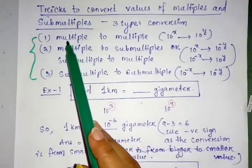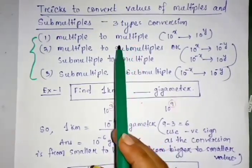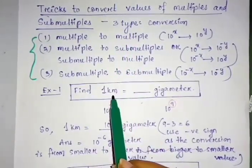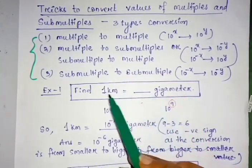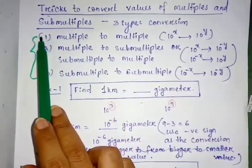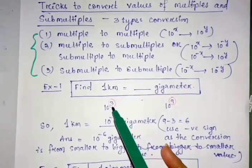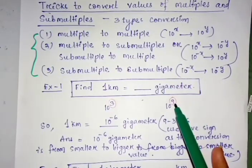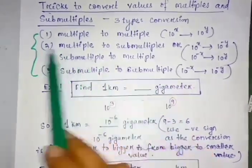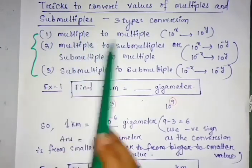First of all, we convert multiple values to multiple values. For example, if the question asks 1 km equals how much gigameter, this belongs to the first conversion, as 1 km equals 10 to the power 3 and 1 gigameter equals 10 to the power 9. This conversion is included in the first type.